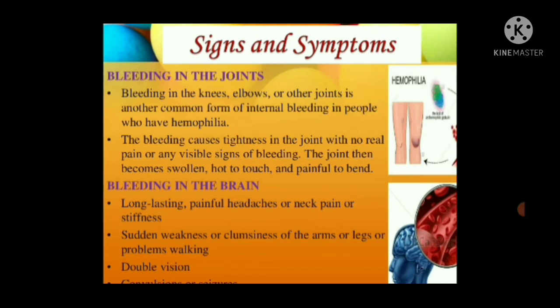Internal bleeding also includes bleeding into joints — knees, elbows, and other joints — which is another common form of internal bleeding in hemophilia patients. This bleeding causes tightness in the joints; the patient feels the joint stiff. There will be visible signs in the joints: they become swollen, hot to touch, and painful to bend.